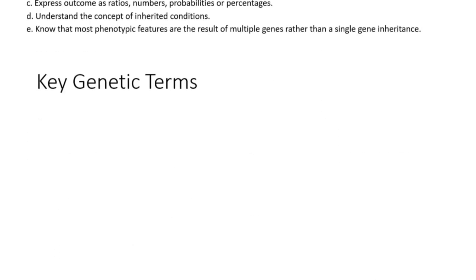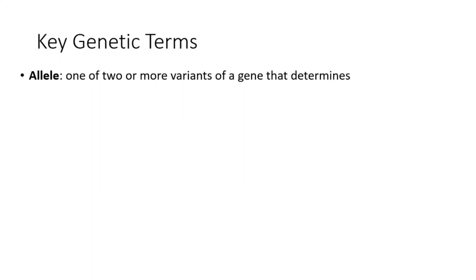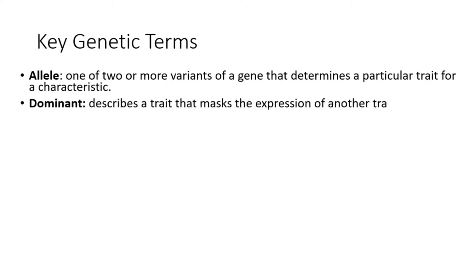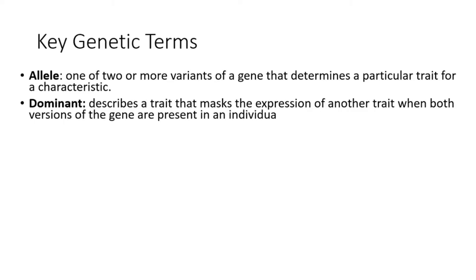Below are some definitions of some key genetic terms to understand for the exam. Let's start with the definition of an allele, which is one of two or more variants of a gene that determines a particular trait for a characteristic. Dominant describes a trait that masks the expression of another trait when both versions of the gene are present in an individual.